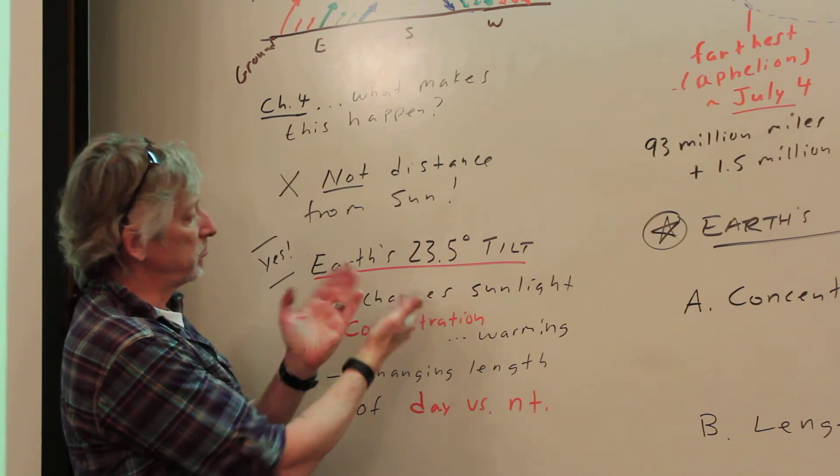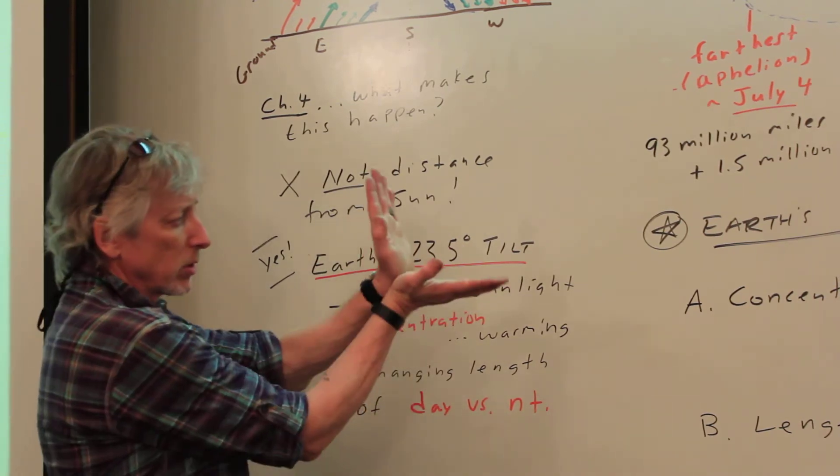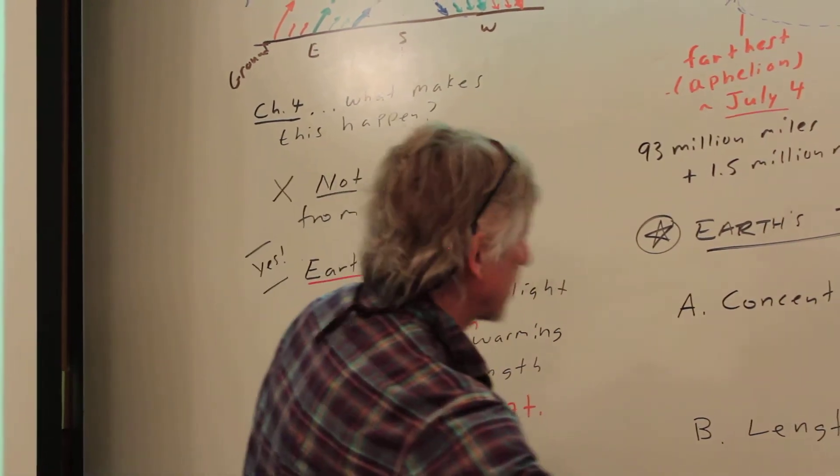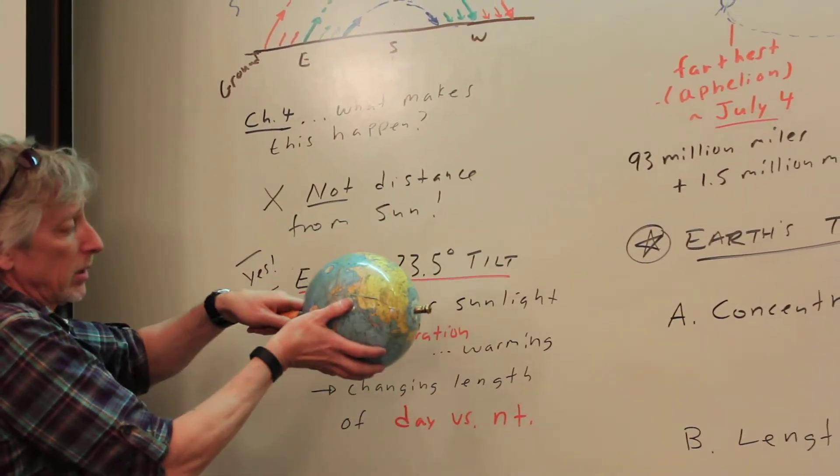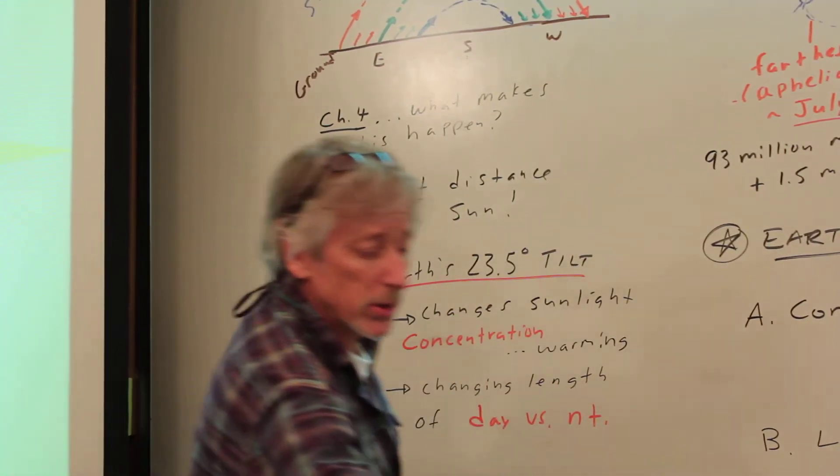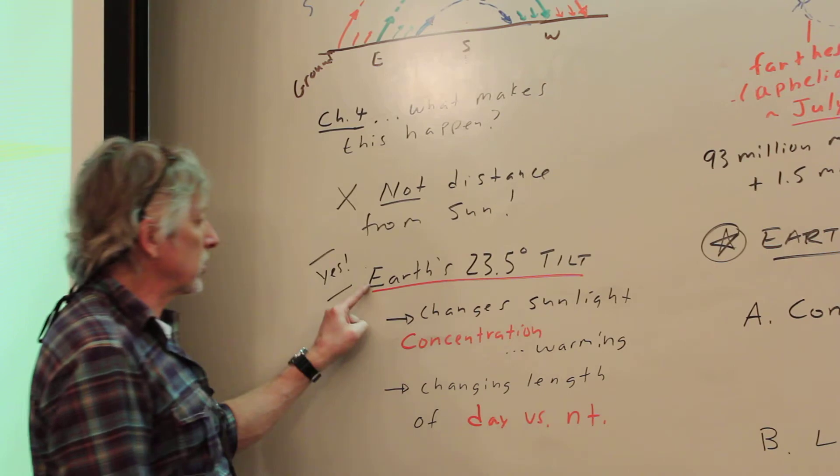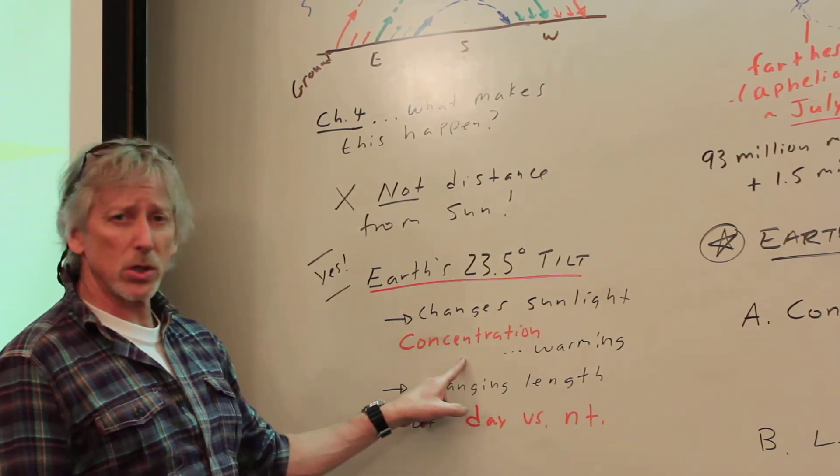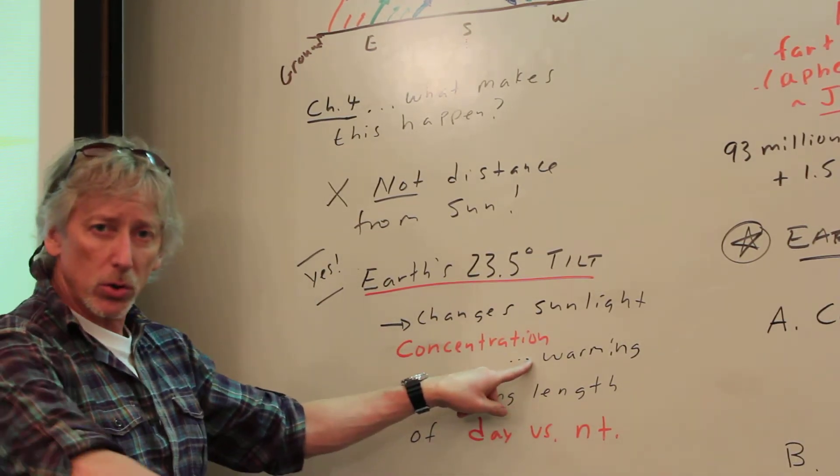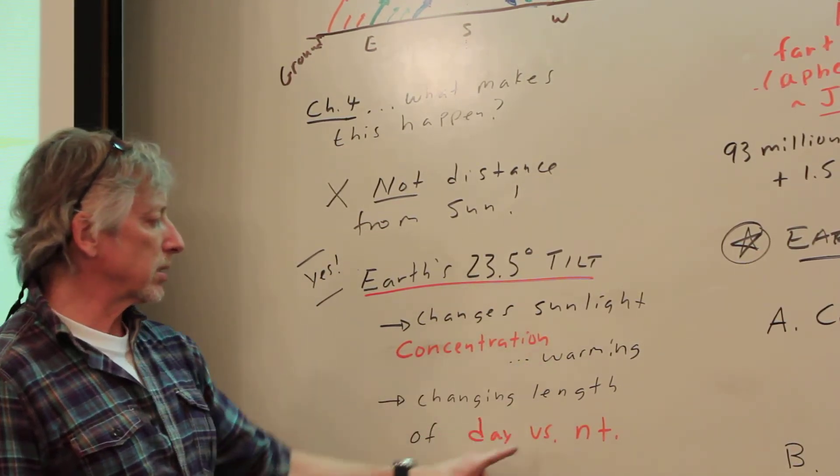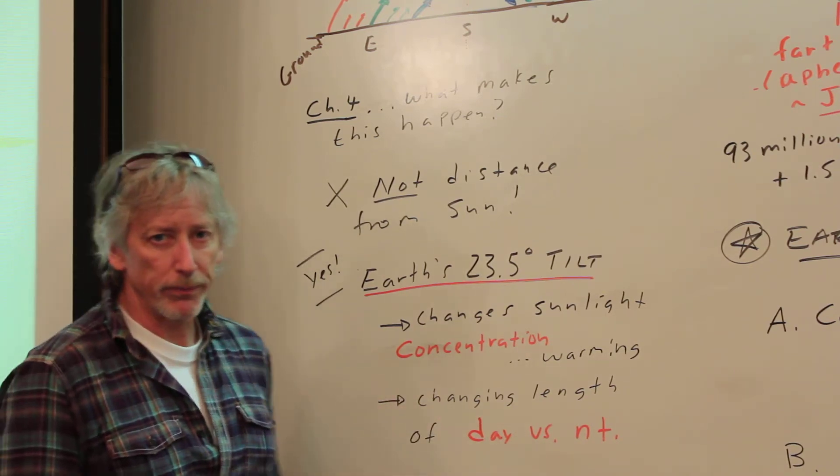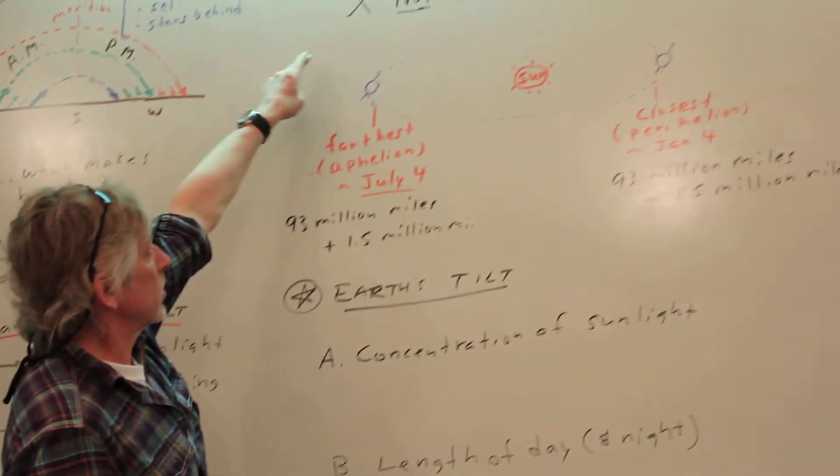And about half of that gives us this. So you can have a good sense: half of 90 is 45. Somewhere in there it's tilted. We're going to talk about Earth being tilted, not 90 degrees, not 45, but somewhere about that as it goes around Earth. So that is the answer. What does it do for us? Well, it changes the sunlight concentration and consequently how much the sunlight warms our Earth's surface, and it also changes the length of day versus night.